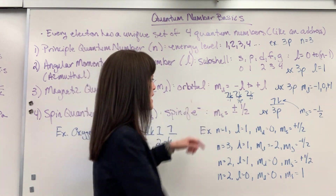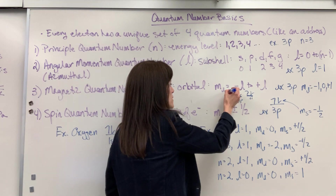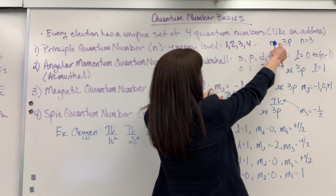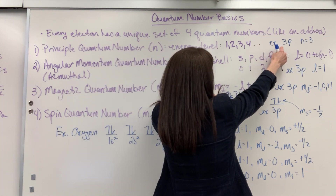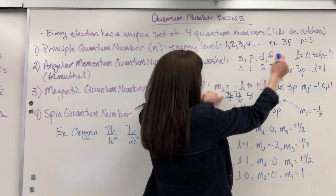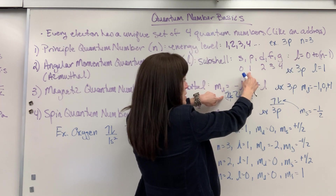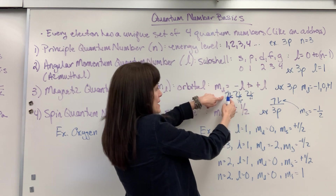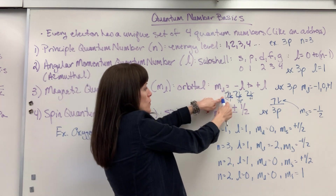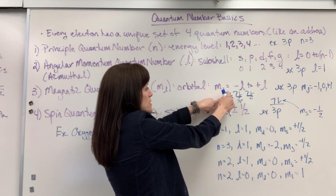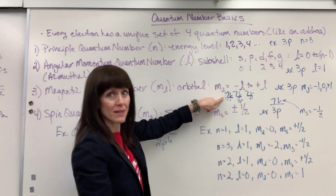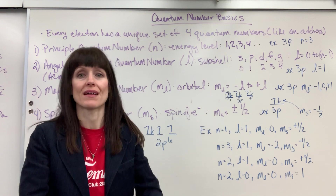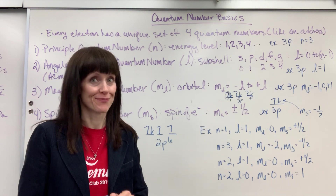If I was looking at a specific electron here — it's quantum number three, it's in the P subshell so angular momentum is one — its magnetic number would be M sub L minus one. I'm narrowing down where that electron exists.